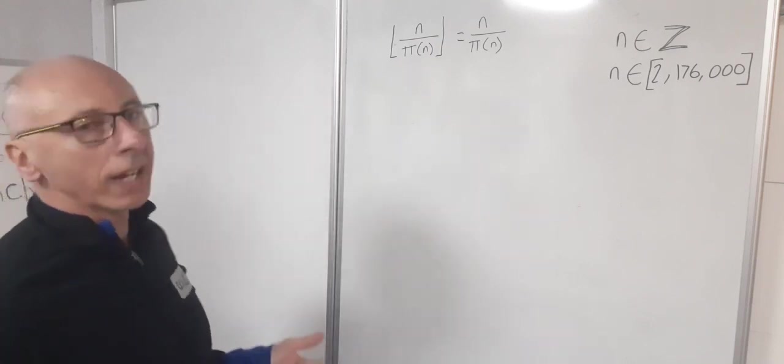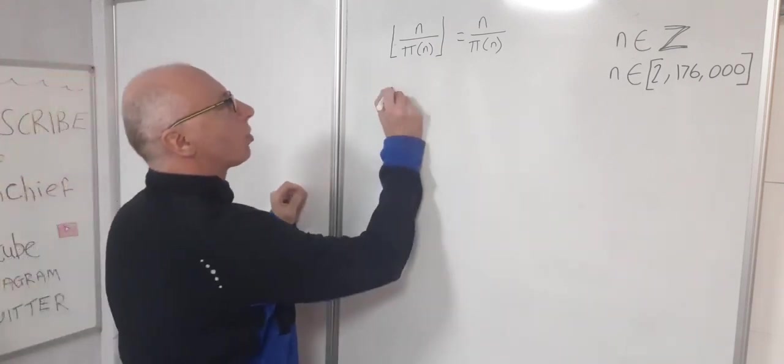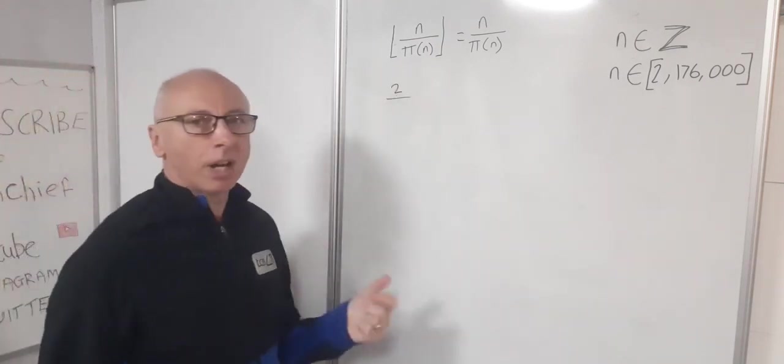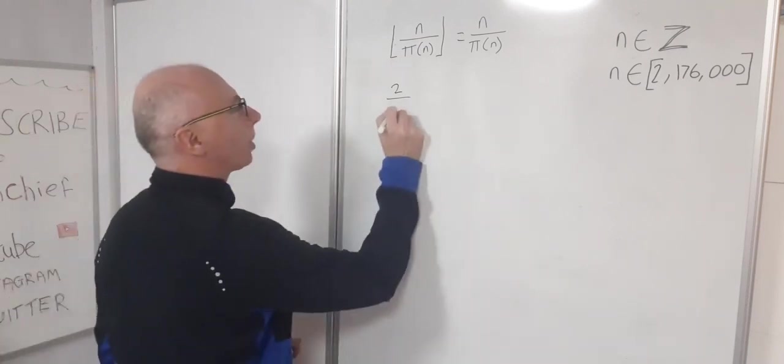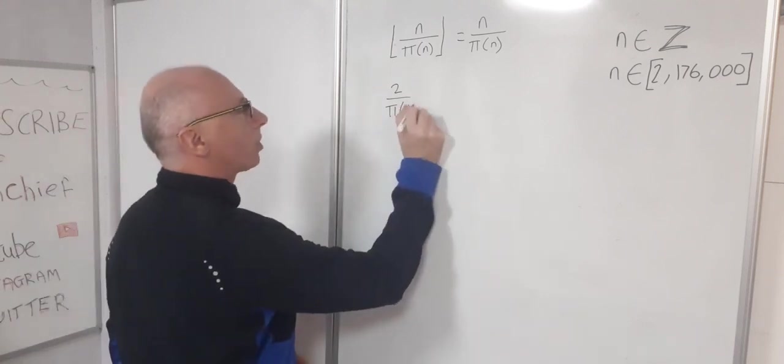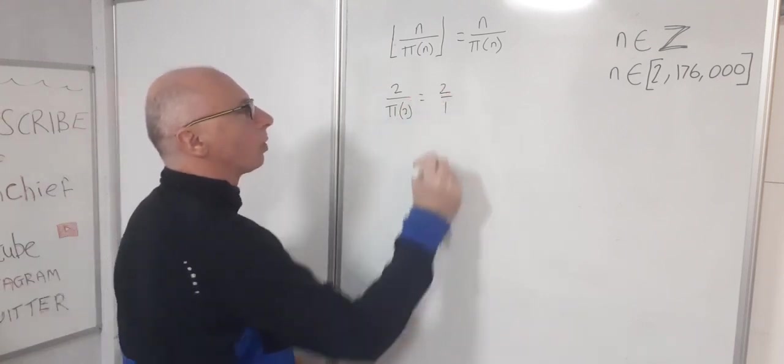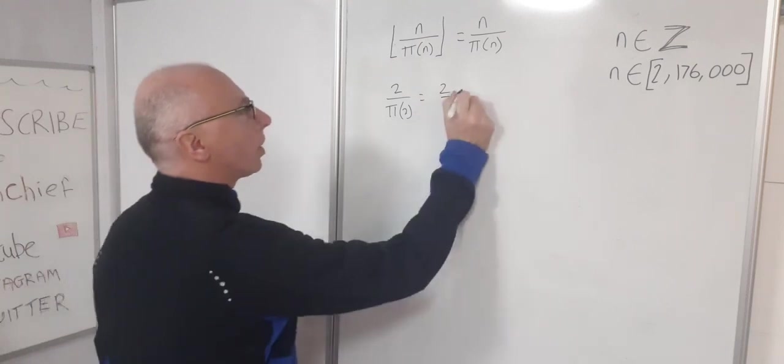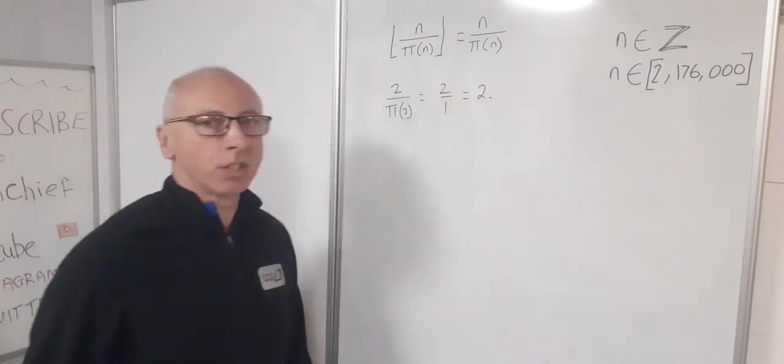So for example if I pick 2, pi of 2 I know there's only one prime number up to and including number 2 because 2 is the first prime number. So pi of 2 that equals 2 over 1 which is my first integer.